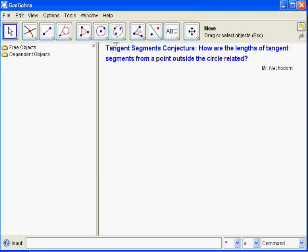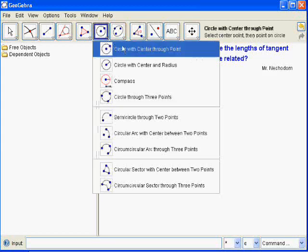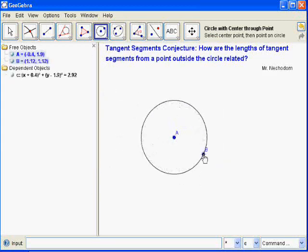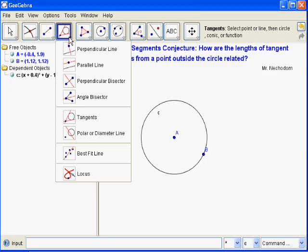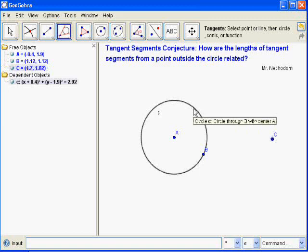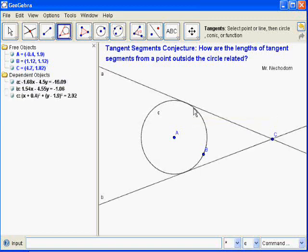My goal is to look at the length of tangent segments so I'll need a circle. I'll go circle center through point, click for the center, click for another point. And now I need to create the tangent segments. To do that, I'll go down here and tangents, click there and click a circle. There I've created them.